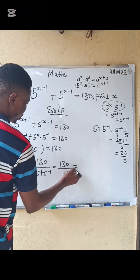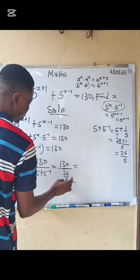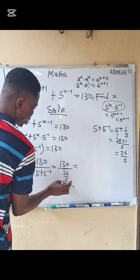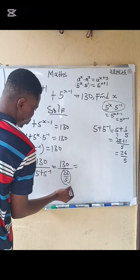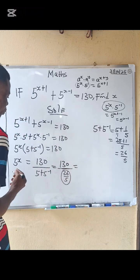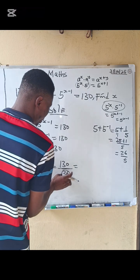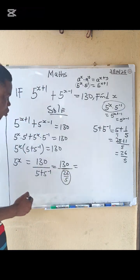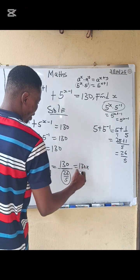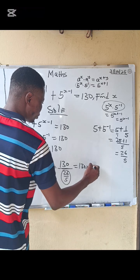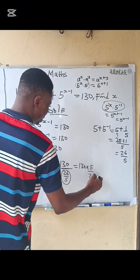Changing the division to multiplication: 180 divided by (26 over 5) becomes 180 multiplied by 5 over 26, which equals 900 over 26.